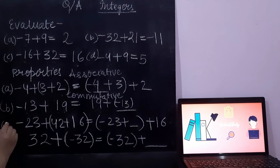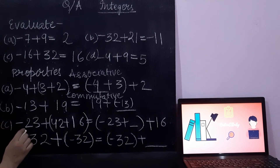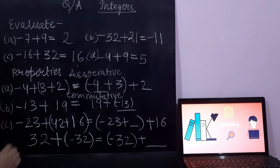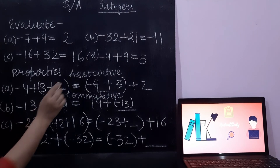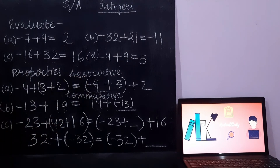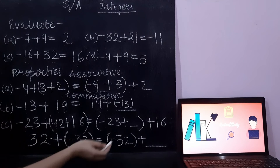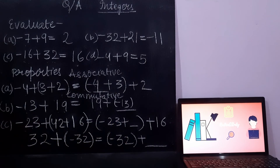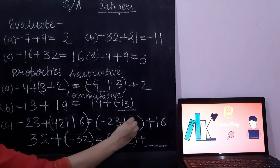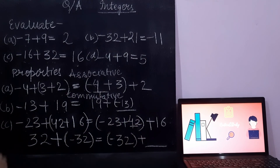Now option C is also based on the associative property of addition. Please tell me what will come in the blank. The answer is 42.